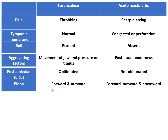The pinna is pushed forward and outward in furuncylosis, while in acute mastoiditis the pinna is pushed forward, outward, as well as downward. So when we see the patient from behind, the level of both pinnas will be the same in furuncylosis, while the level of the pinna on the affected side will be lower in acute mastoiditis.